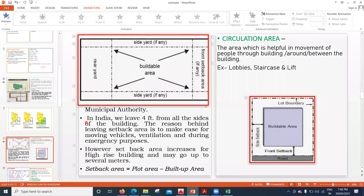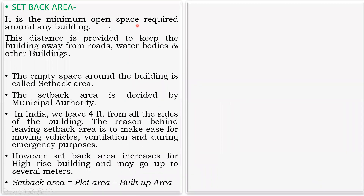Now we'll see what is setback area. It is the minimum open space required around any building. This distance is provided to keep the building away from the road, water bodies, and other buildings. The empty space around the building is the setback area. How much to keep is decided by the local municipality authority. Generally in India we leave around four feet from all sides of the building, for ease of movement of vehicles, ventilation, and emergency purposes.